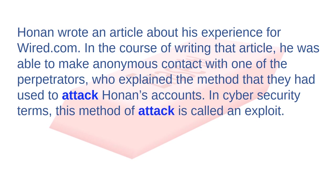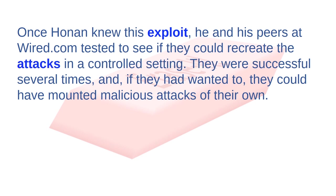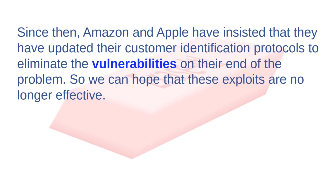In cybersecurity terms, this method of attack is called an exploit. Once Honan knew this exploit, he and his peers at Wired.com tested to see if they could recreate the attacks in a controlled setting. They were successful several times. Since then, Amazon and Apple have insisted that they have updated their customer identification protocols to eliminate the vulnerabilities on their end. So we can hope that these exploits are no longer effective.